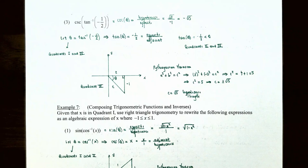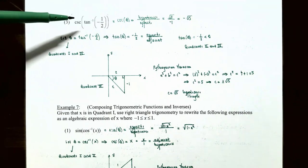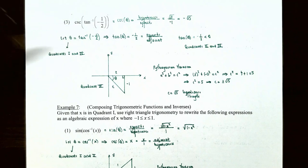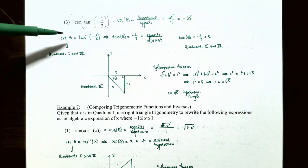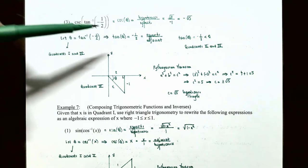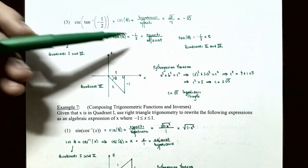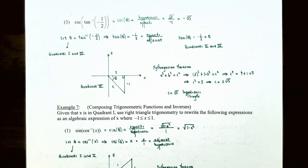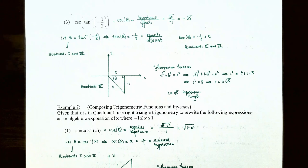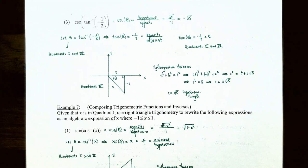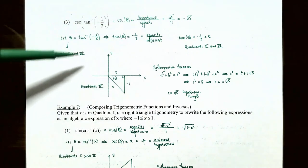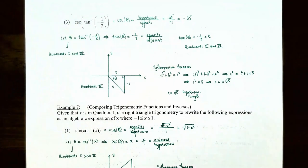Number three: cosecant of inverse tangent of negative one-half. Again we call inverse tangent of negative one-half the angle theta, so tangent of theta equals negative one-half. Tangent is negative in quadrants two and four, but since the inverse tangent function requires theta between negative pi over two and pi over two, the angle must be in quadrant four. Tangent is opposite over adjacent, so the opposite side is negative one and the adjacent side is two.